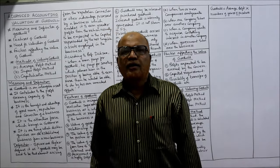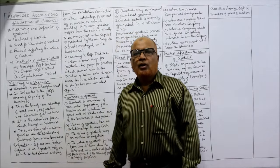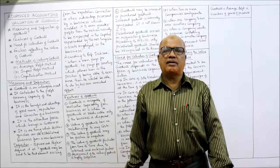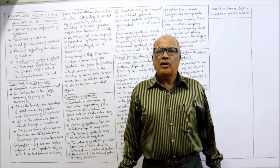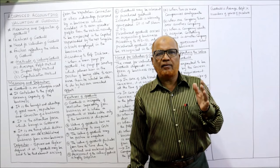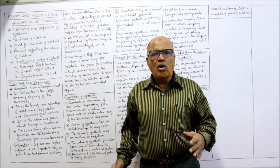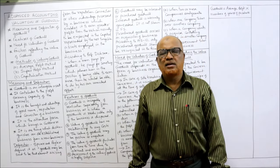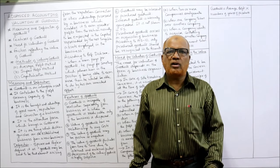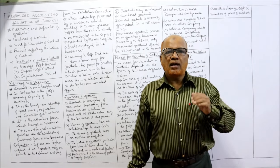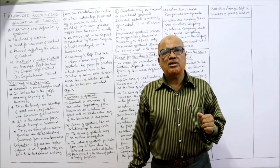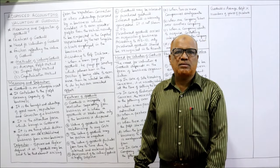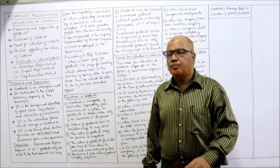First of all, the meaning of the term goodwill. Goodwill is an intangible asset. There are two types of assets — tangible and intangible. Tangible assets are those which we can see and touch, for example machinery, building, furniture, equipment, computers, vehicles. Apart from tangible assets we have intangible assets — those which we cannot see or touch, but they exist and contribute to the profit generating of the business.